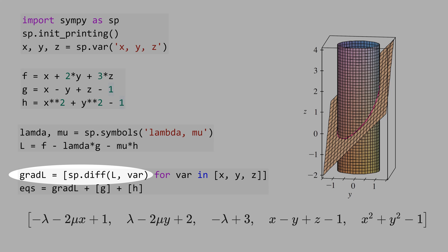That's the derivative of L in respect of var. Var is x, y, and z. And our system of equations is composed by the gradient of L plus the two constraints g and h. The gradient is composed by these three equations and these two last equations are the constraints.